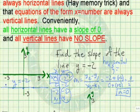Once again, any time you have a horizontal line, the slope will always be 0.